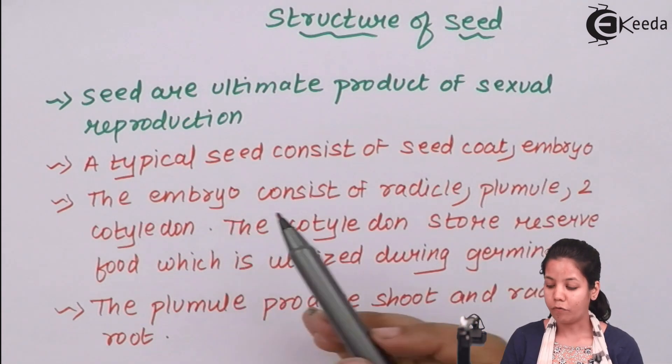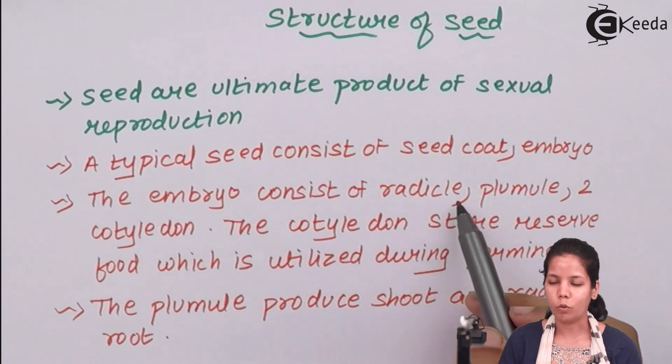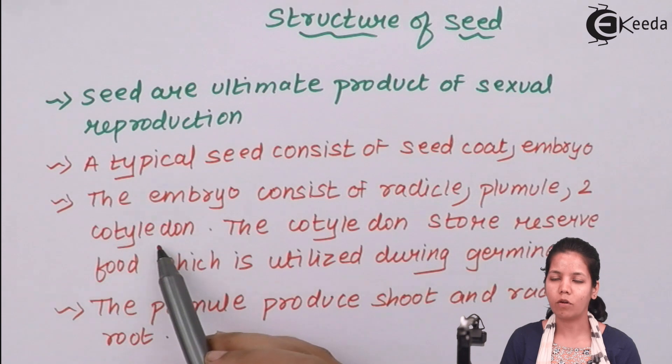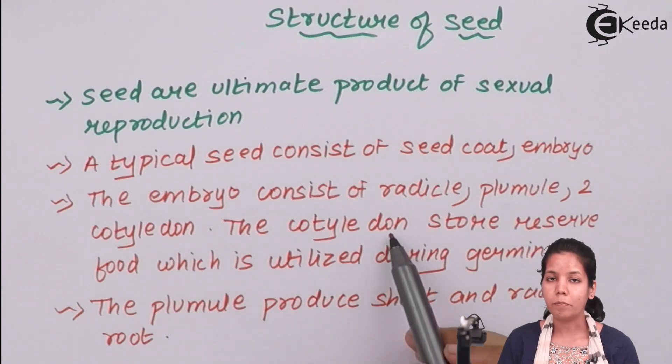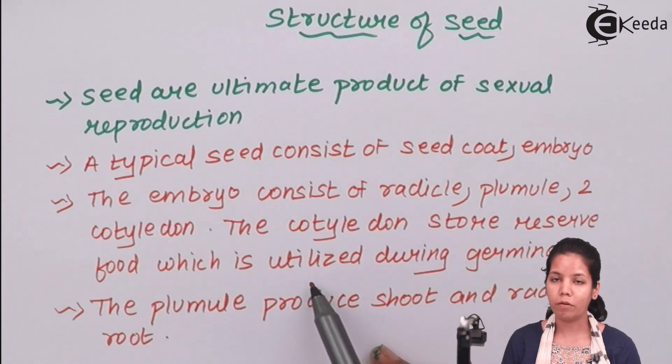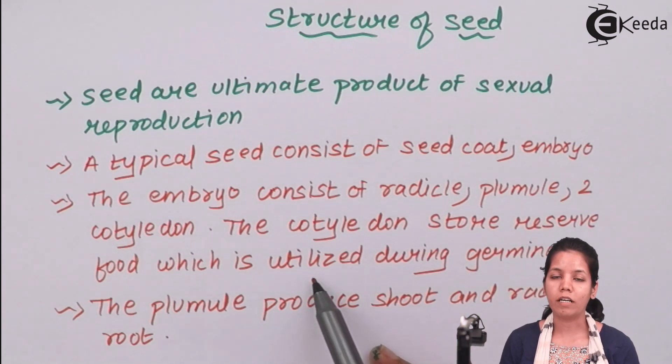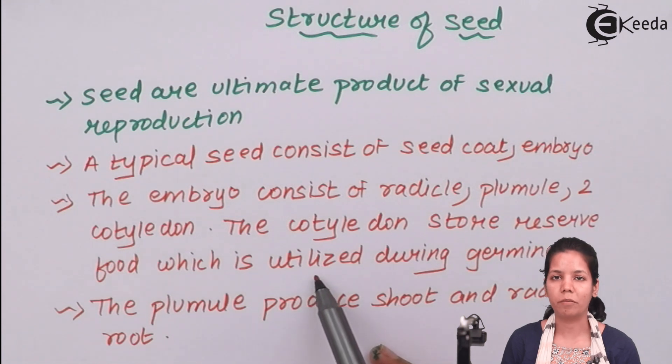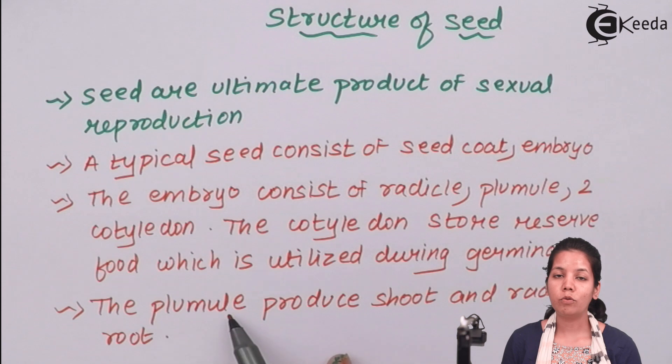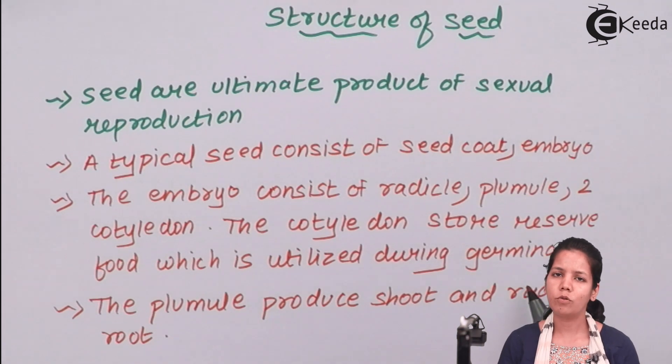An embryo basically consists of radicle, the small outgrowth, plumule, the green color structure, and two cotyledons. The cotyledons store reserved food material which is used during germination. Plumule develops into the shoot or stem region whereas the radicle develops into the root region.